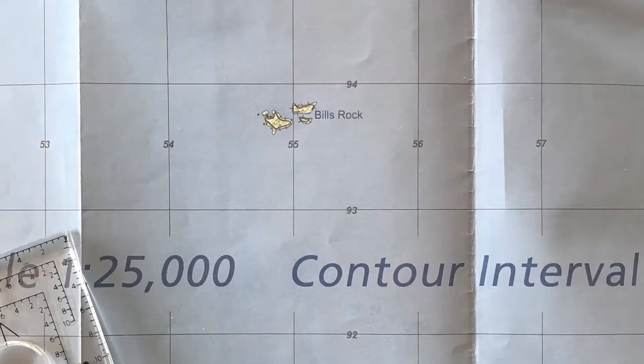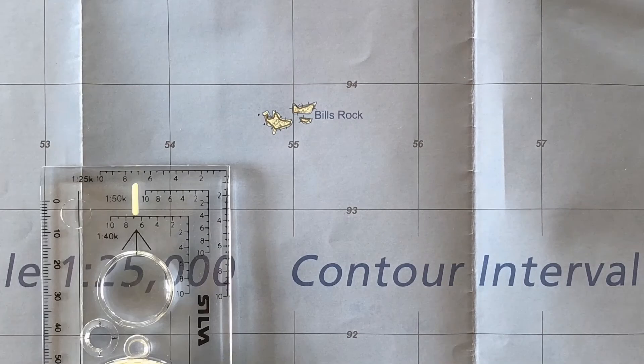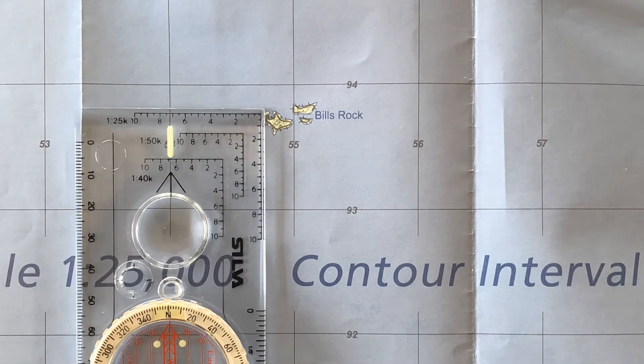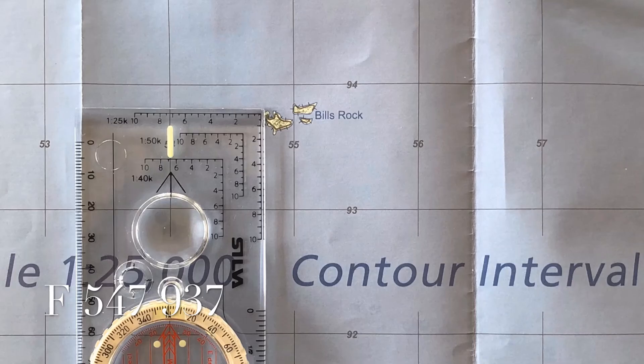So if I bring in the compass and put the corner of the roamer up on that most westerly point of Bill's Rock, I'll count the numbers across, so it was 54 and I see it's between the 7 and 8 in the roamer, so that would be 547. And then if I count up the way, so it's 93, and again I see it's between the 7 and the 8, so it'd be 937.